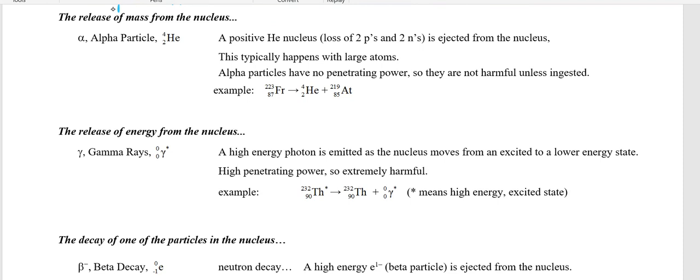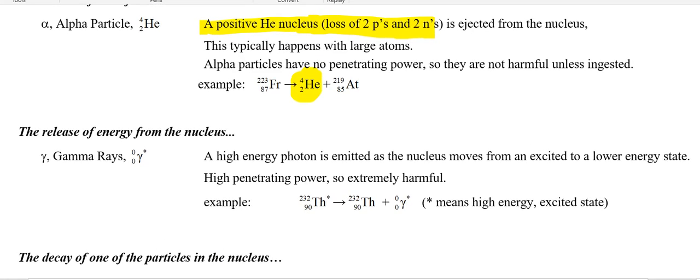Let's release some mass from the nucleus — it's a positive helium nucleus, so there are two protons and two neutrons. Since it's a helium nucleus, helium is 4, 2 — mass of 4, atomic number 2. This alpha particle is usually ejected out of larger atoms, not smaller ones — think beyond zinc, typically, something in the lower half of the table. Alpha particles don't really have any penetrating power. They're not really dangerous in smoke detectors, but don't ingest alpha emitters — if you ingest them, they're very, very dangerous.